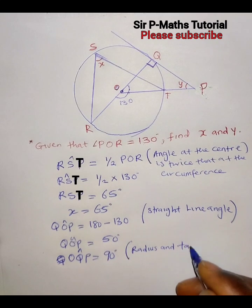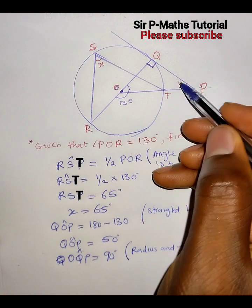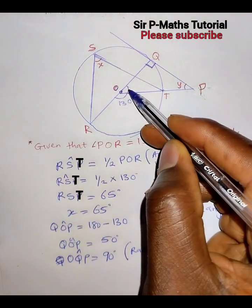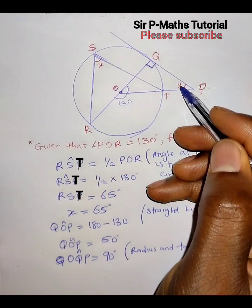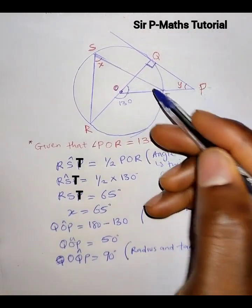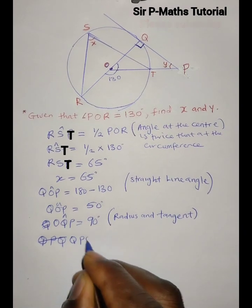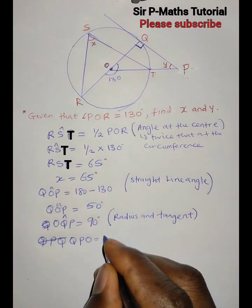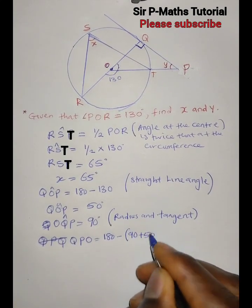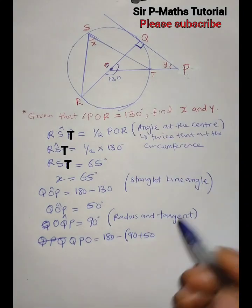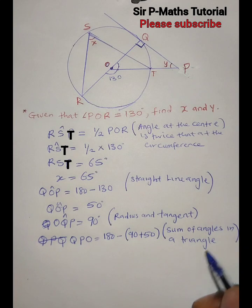Now, adding these angles and subtracting from 180 degrees gives us the remaining angle, because the sum of angles in a triangle equals 180 degrees. So QPO equals 180 minus 90 plus 50, which gives us 180 minus 140, therefore QPO equals 40 degrees. Hence Y equals 40 degrees.